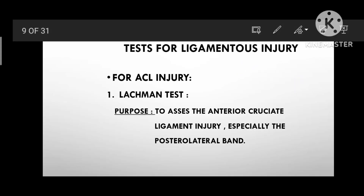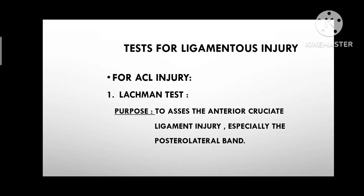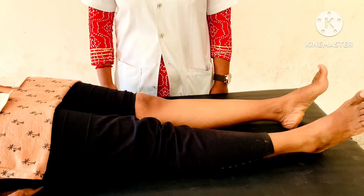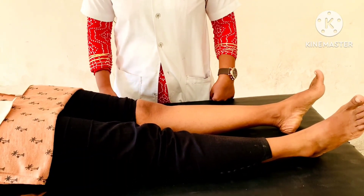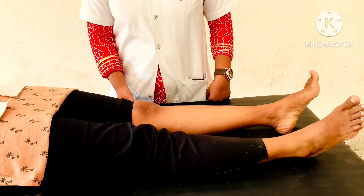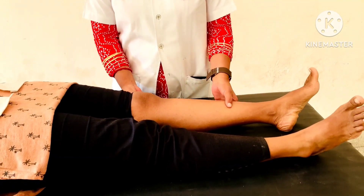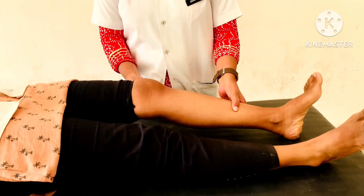Test for Ligamentous Injury. For ACL Injury: Lachman Test. Purpose: to assess the anterior cruciate ligament injury, especially the posterolateral band. Patient Position: supine lying. Therapist Position: standing beside the tested side. The examiner holds the patient's knee between full extension and 30 degrees of knee flexion.